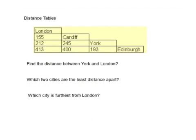Distance tables such as this seem to cause people quite a few problems because of how they read the horizontal line of values. Quite often the mistake we see made is: if you were asked the distance between York and London, people would read down a little bit then read straight along and give an answer of 413, because this is the London column here. That would be incorrect.